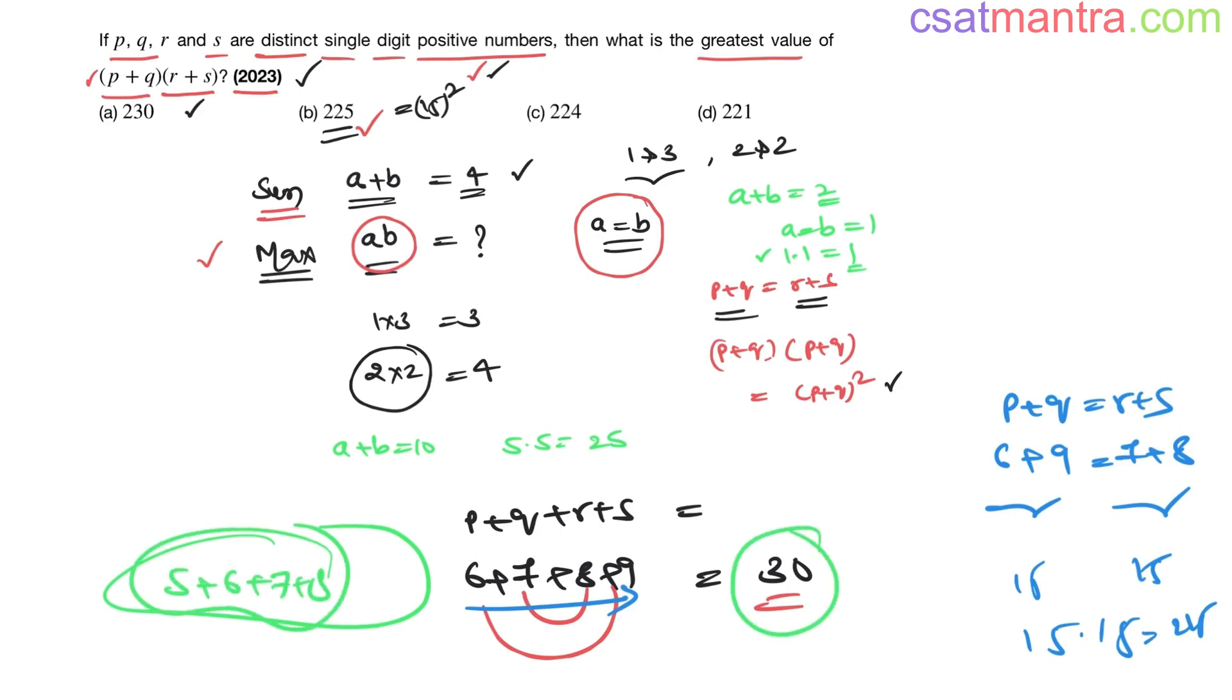So to have the sum maximum, you need to take p, q, r, s like this, starting from 6. When this is maximum, product would be maximum. For the product to be maximum, p plus q should be r plus s. I hope this is rightly understood.